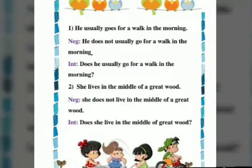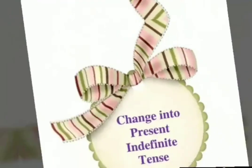Sentence four: He usually goes for a walk in the morning. With he, we will use does. Negative: He does not usually go for a walk in the morning. Interrogative: Does he usually go for a walk in the morning? Sentence five: She lives in the middle of a great wood. With she, we will use does. Negative: She does not live in the middle of a great wood. Interrogative: Does she live in the middle of a great wood?